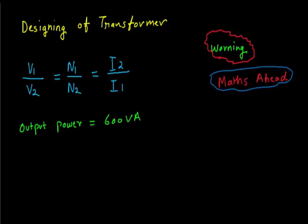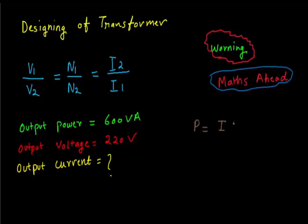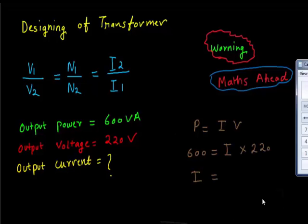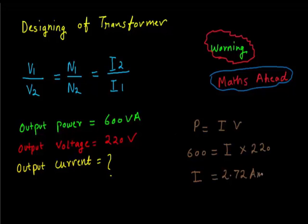As you know that output power is 600 VA and the output voltage is 220 volt AC. So output current will be, you can know by P is equal to IV, 600 is equal to I cross 220. You can know by using the calculator, I is 2.72 ampere.